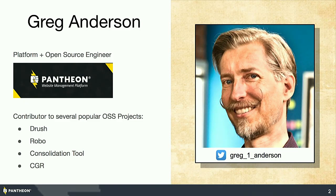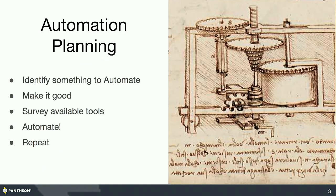I'm going to start with the question: what are you going to automate? What can you automate? To do a good automation, you want to identify something that you do repetitively. You want to start off by making it good so you don't take a bad practice and do it a lot of times. Survey the available tools, automate it, and then start over — because you can always improve the process.